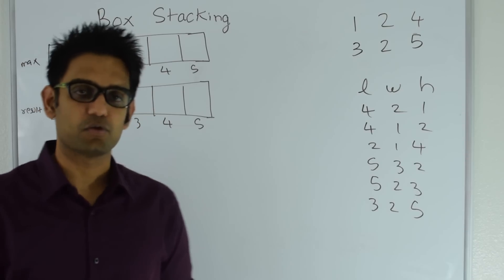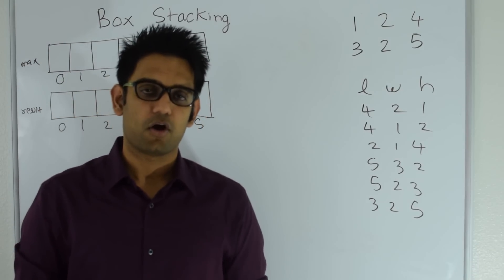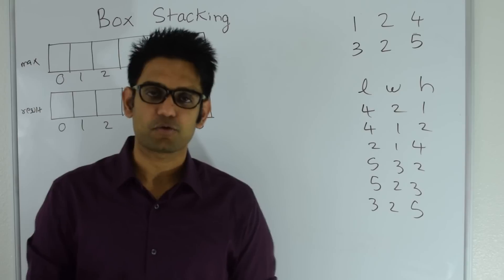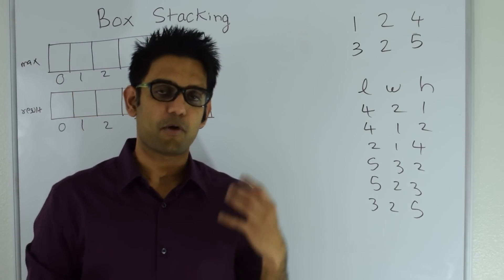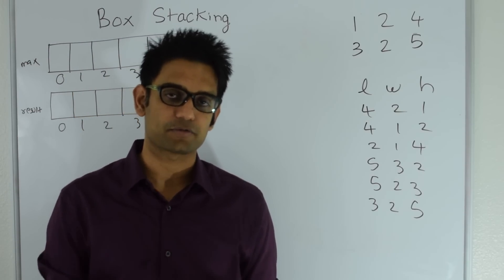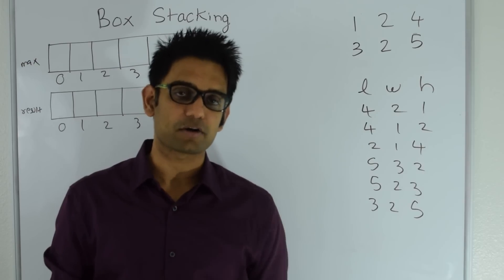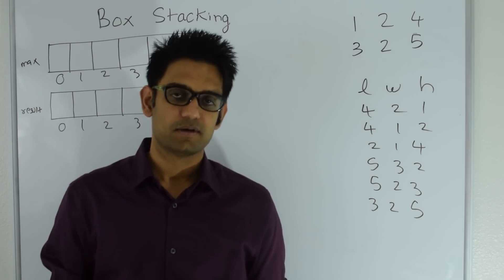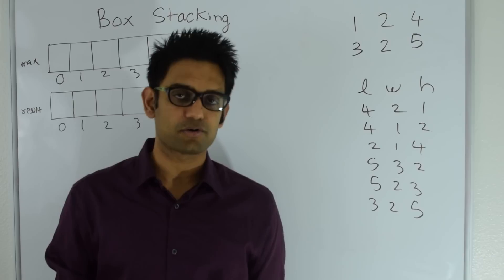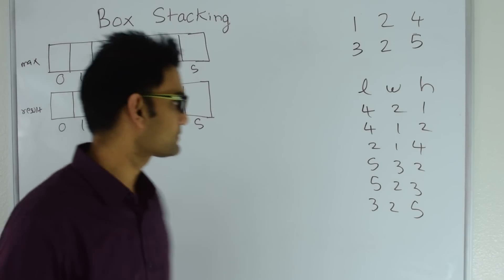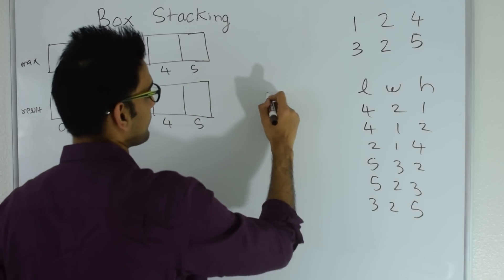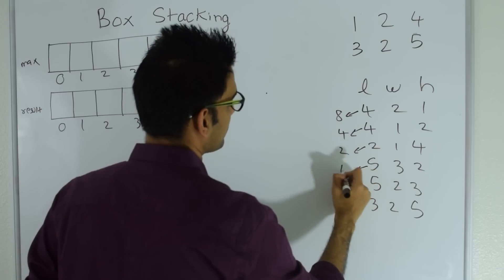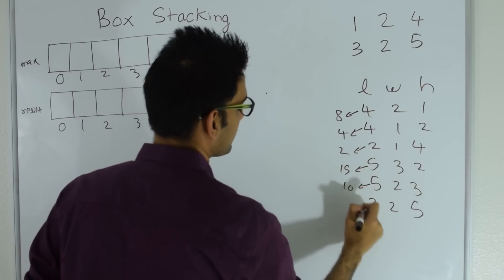Next we sort them in decreasing order of their base area, where base area equals length times width. The reason is that if box 1 has a higher base area than box 2, there is no way box 1 can go on top of box 2. But if box 1 has a smaller base area than box 2, there is a chance it can go on top. So sorting by base area: the areas are 8, 4, 2, 15, 10 and 6.